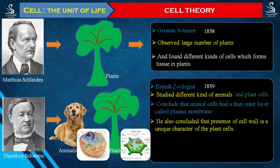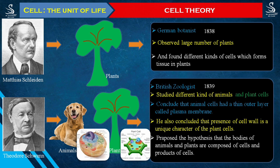Finally, Schwann put forward the hypothesis that the bodies of animals and plants are composed of cells and products of cells. Our body is not made just by cells — for example, our hair and nails are not made of cells themselves, but are products of cells. There are several such organs and tissues in our body that are made by cells and the products of cells. This hypothesis was put forward by Schwann in the year 1839.